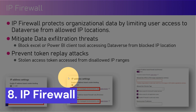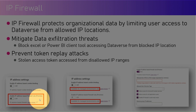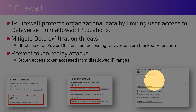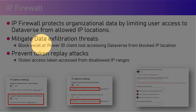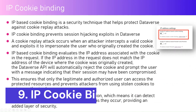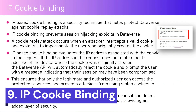IP firewall protects your organization's data by limiting user access to Dataverse from allowed IP locations. You can set up your organization's IP addresses so that only users accessing from those IPs are allowed to access Dataverse. You can specify IP ranges using IPv4 or IPv6. The benefits include preventing token replay attacks, mitigating data exfiltration threats, and protecting organizational data by limiting Dataverse access to specific IP locations.